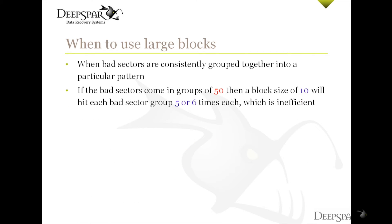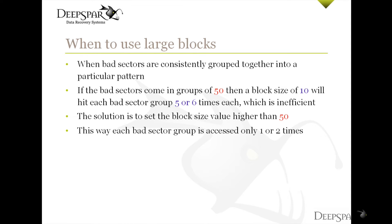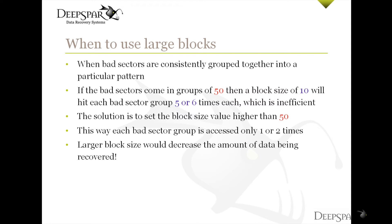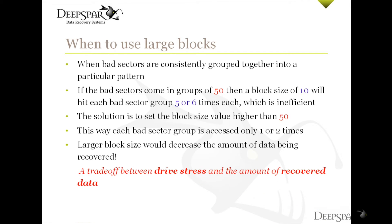For example, if bad sectors come in groups of 50, then using a block size of 10 will result in hitting each bad sector group 5 or 6 times each, which is inefficient and unnecessary. A better choice would be to set the block size to a value higher than 50 so that each bad sector group is accessed only 1 or 2 times. The larger the block size chosen, the fewer times we access each bad sector group on average, which is lighter on the drive. At the same time, a larger block size decreases the amount of data being recovered because we skip more sectors with each failed read command. It's a trade-off between drive stress and the amount of data being recovered.